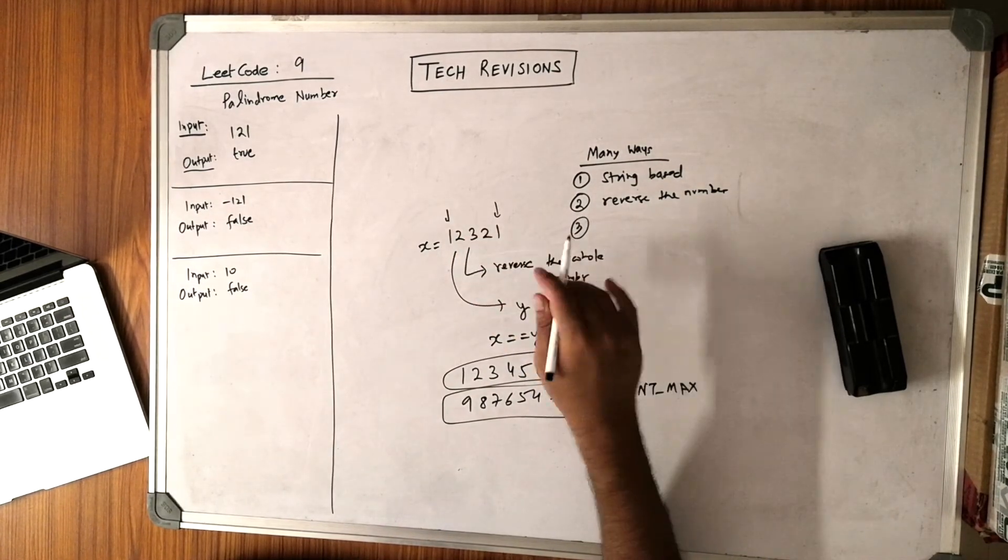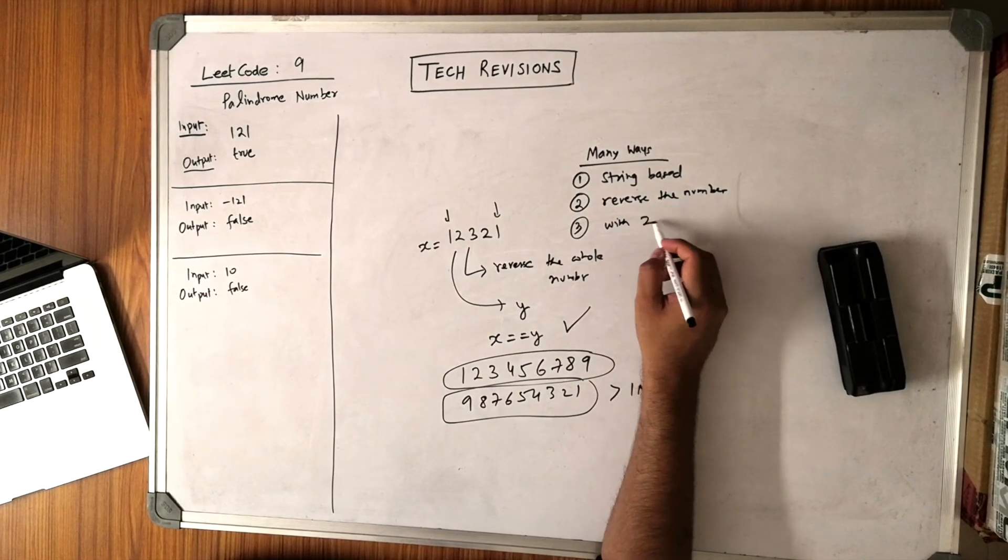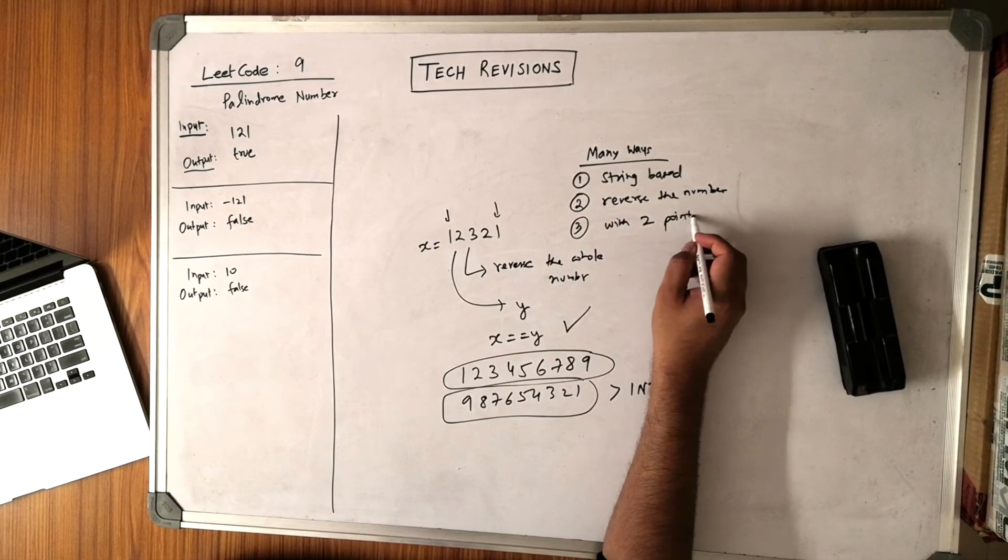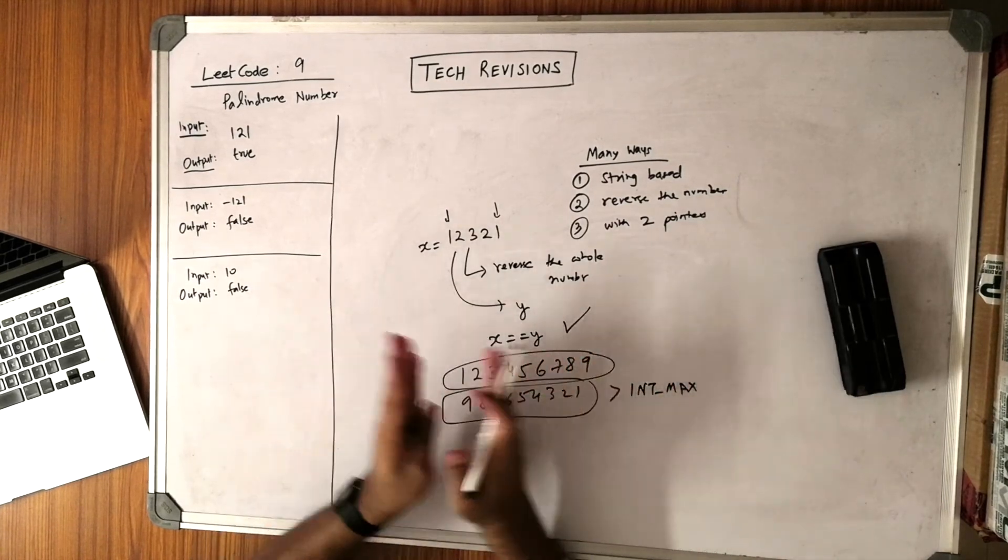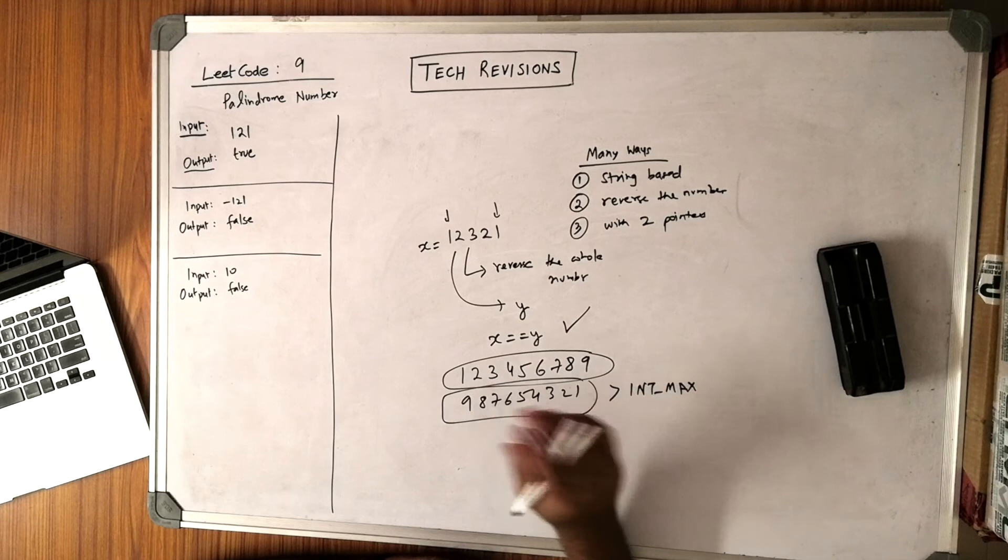Basically, having the two pointers, you can use that and then keep comparing them until you meet in between, and then you can declare whether the number is a palindrome or not.